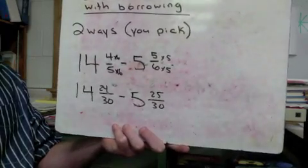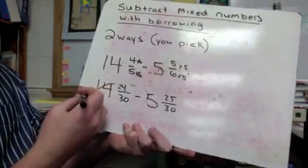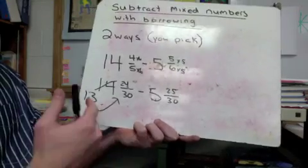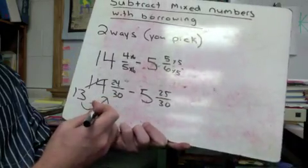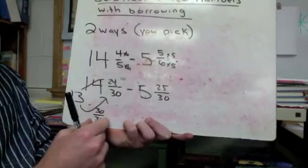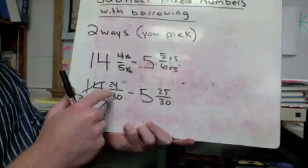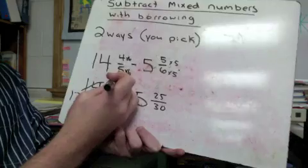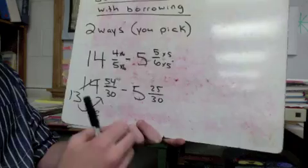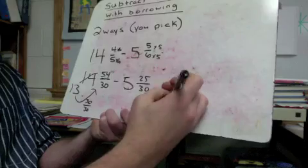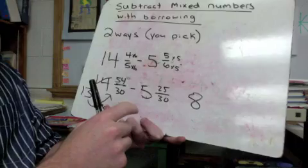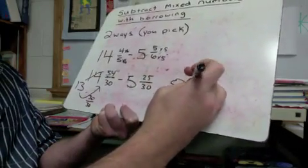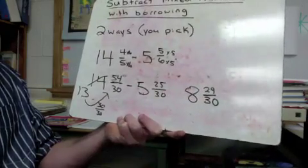We're really close but not quite able to subtract, so let's do our borrowing. I borrow from 14, so it becomes 13. We need to put one whole with our fraction — one whole with a bottom number of thirty is thirty-thirtieths. So thirty-thirtieths plus the twenty-four thirtieths gives us fifty-four thirtieths. Now: thirteen minus five is eight, and fifty-four minus twenty-five — fifty-four, forty-four, thirty-four — that's twenty-nine. So our answer is eight and twenty-nine thirtieths.